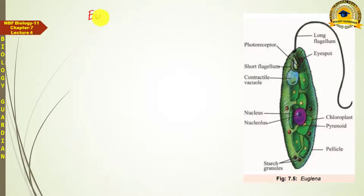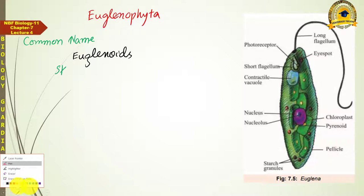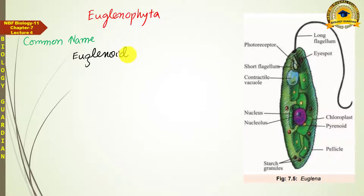The first group is Euglenophyta. Its scientific name is Euglenophyta and its common name is Euglenoids. The famous member after which this group is characterized is called Euglena. All Euglenoids are unicellular.